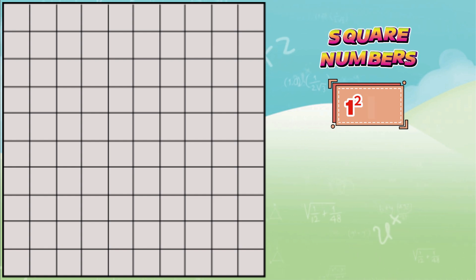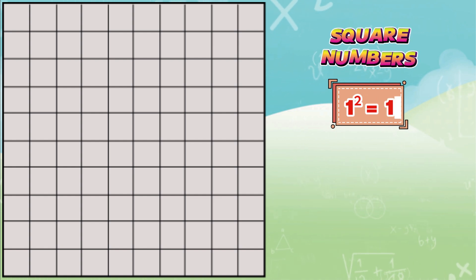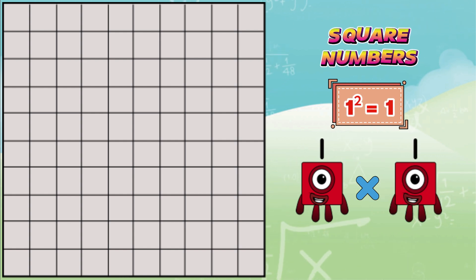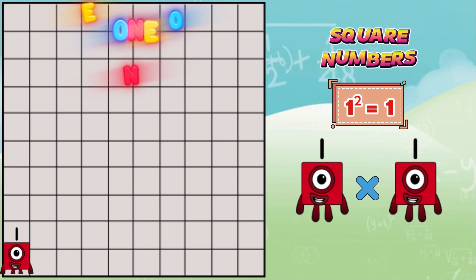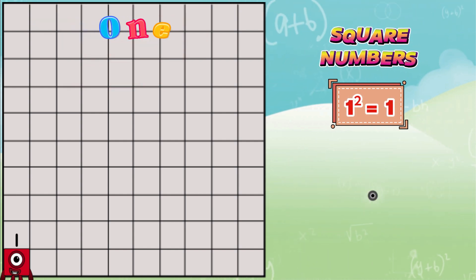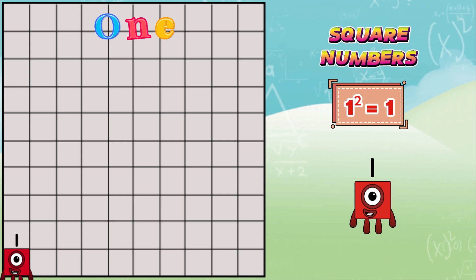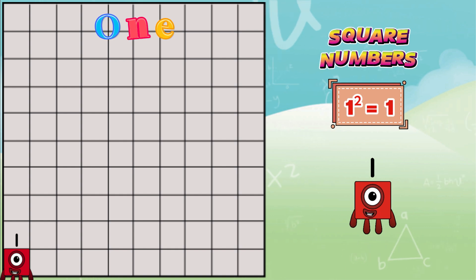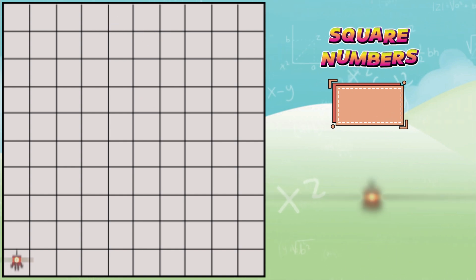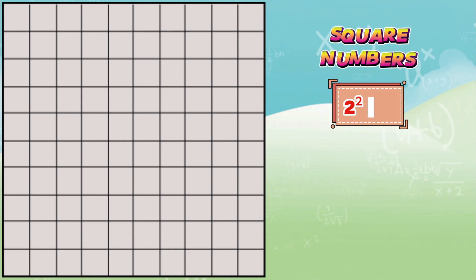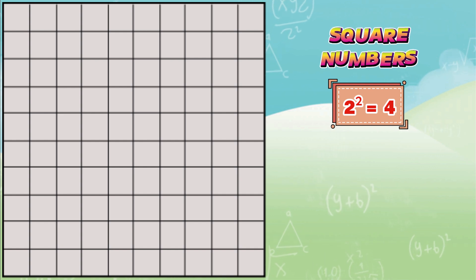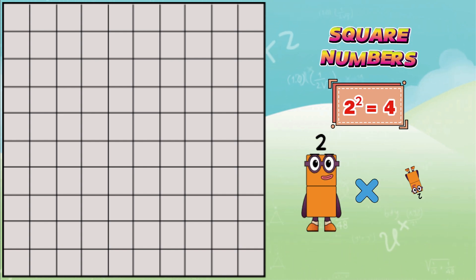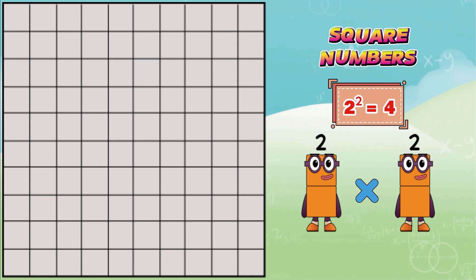One squared is equals to one, or one multiplied by one, is equals to one. Two squared is equals to four, or two multiplied by two, is equals to four.